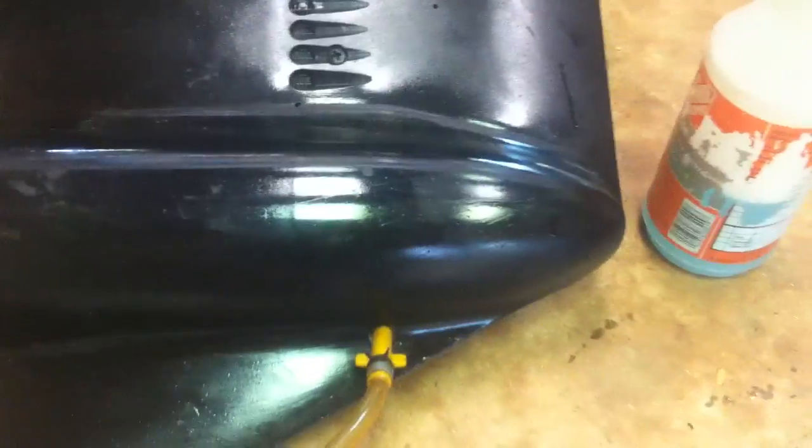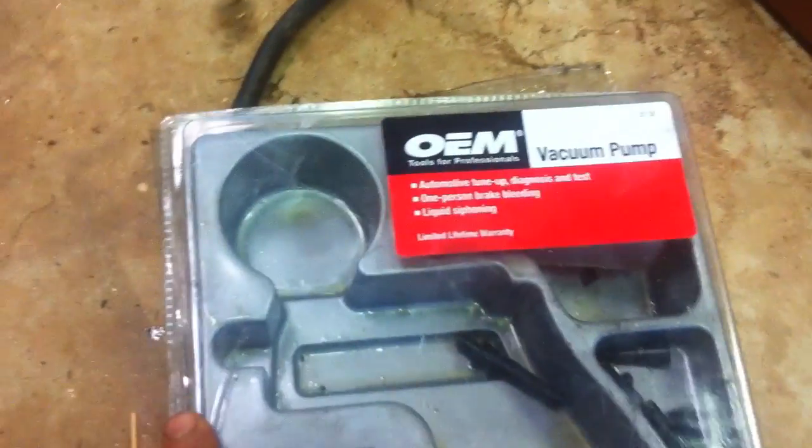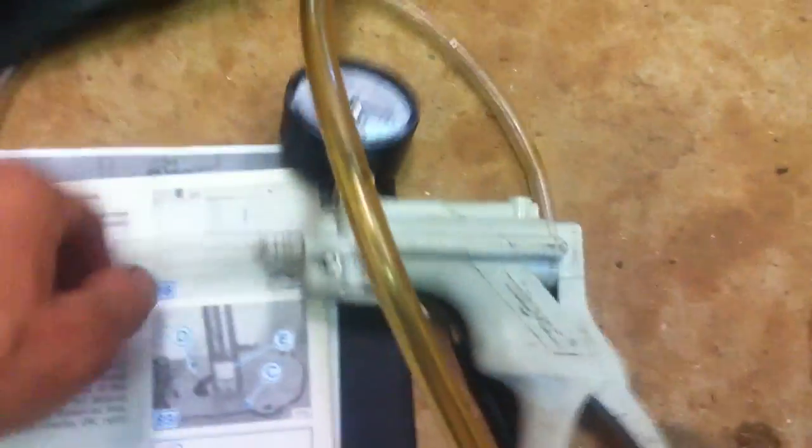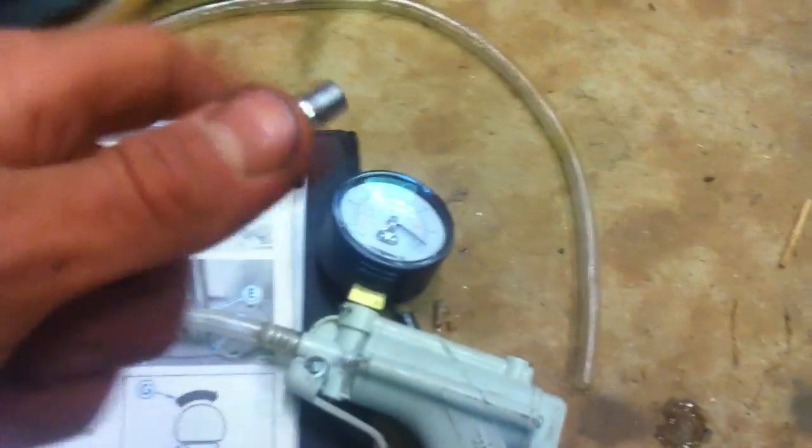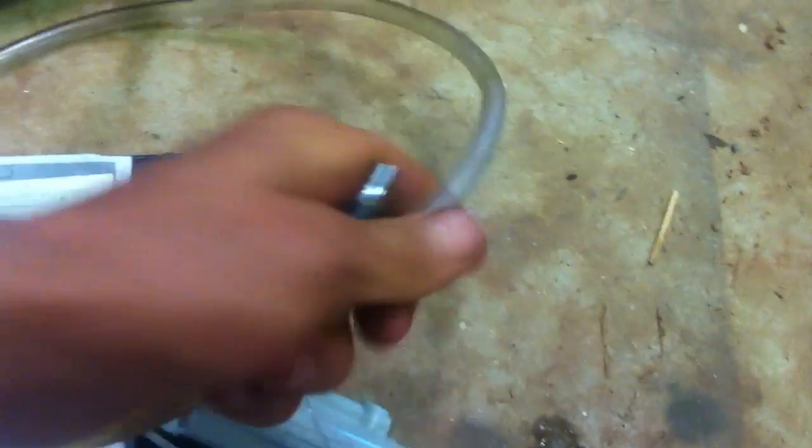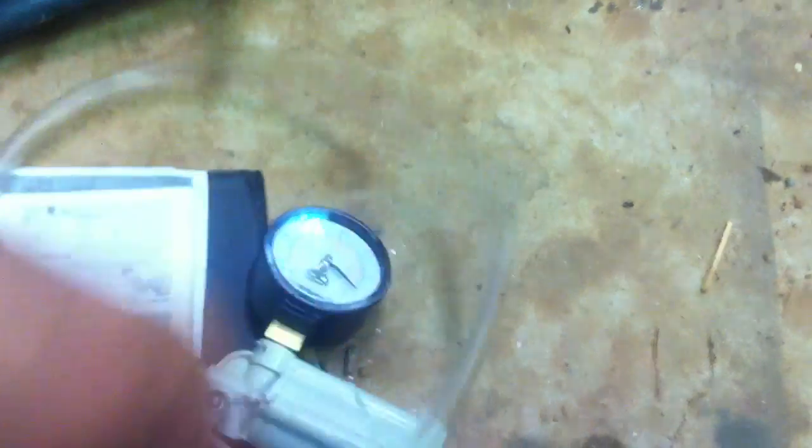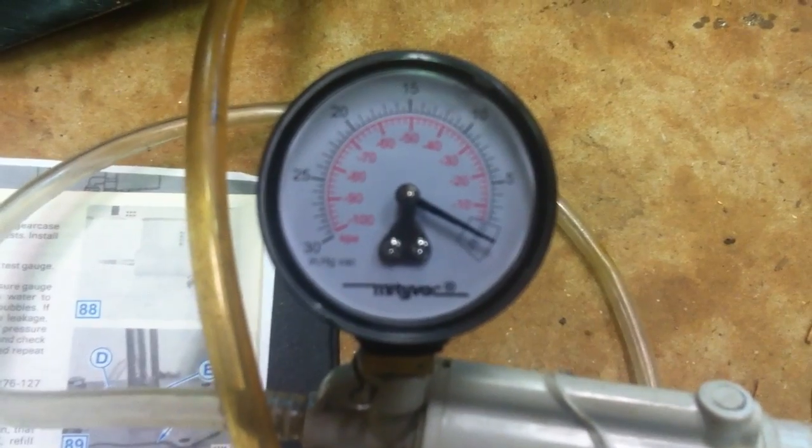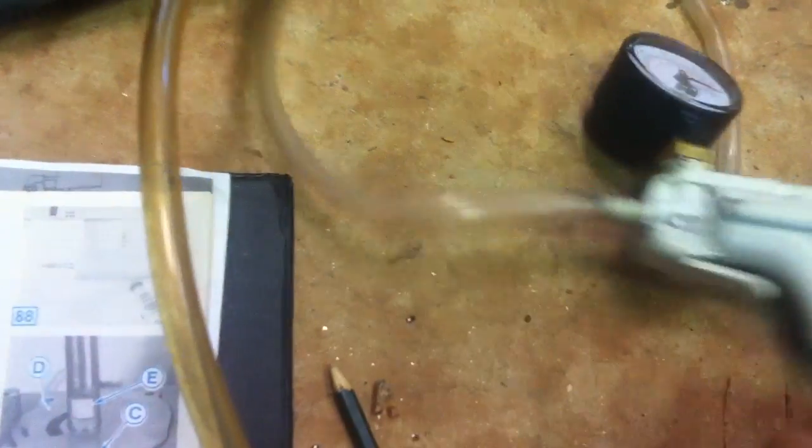Then I'm going to get this vacuum checker right here. This is from AutoZone or whatever. Any parts store sells these. It's got a gauge on it and I'm just going to take the Schrader valve out of the inside of this and just put this hose on here and then pump it up. I'm going to pump it up to whatever it says it's supposed to be and see if there's any leaks.